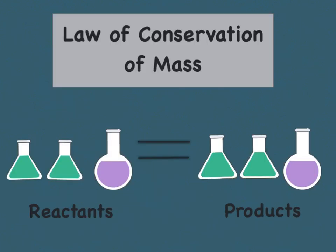Lastly, today we are going to go over the law of conservation of mass. The law of conservation of mass says that during a chemical reaction we should start and end with the same amount — meaning the number of reactants and products should be equal. Let's take for example the reaction involving hydrogen and oxygen in order to produce water, or H₂O.